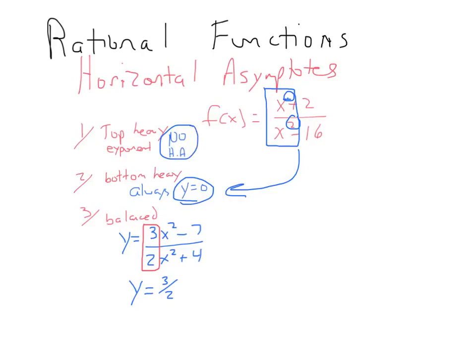And that leaves one last condition. If the exponents are the same, then I would consider that to be a balanced scenario. And for a balanced scenario, you just peel the coefficients right off the front, 3 over 2. So you have y equals 3 over 2 as the horizontal asymptote in that case.